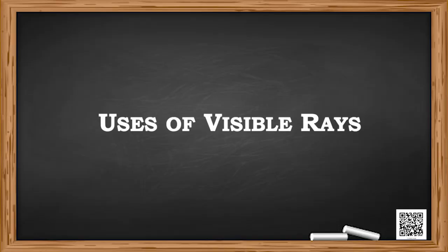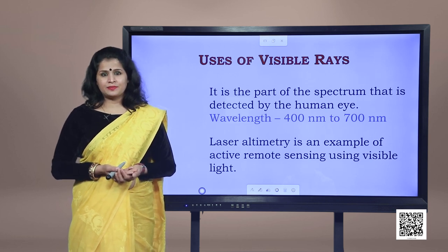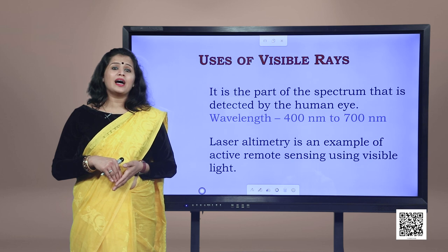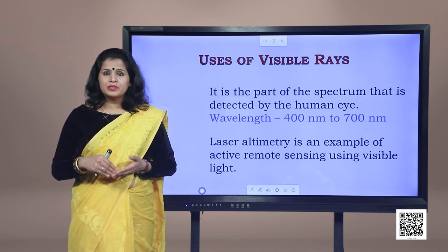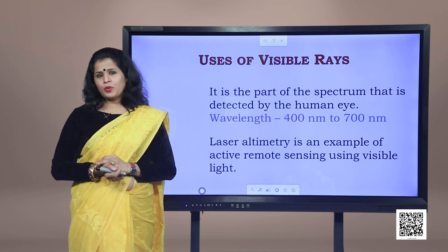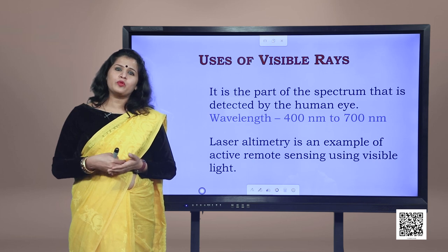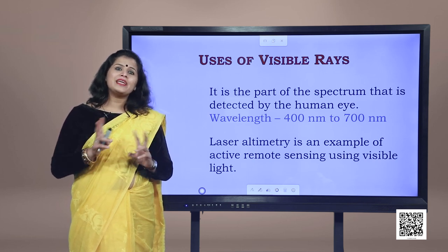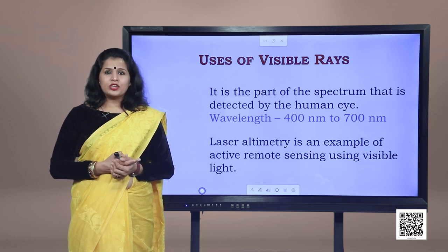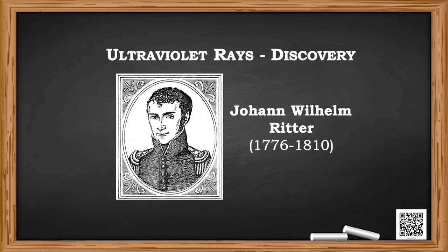The uses of visible rays are very obvious — you cannot see anything without these rays. The wavelength of visible rays lies between 400 nanometres to 700 nanometres. Do all animals have the same visible range? Different animals are sensitive to different ranges of wavelengths. For example, snakes can detect infrared waves, and the visible range of many insects extends well into the ultraviolet range. Visible light is also used in laser altimetry as an example of active remote sensing.